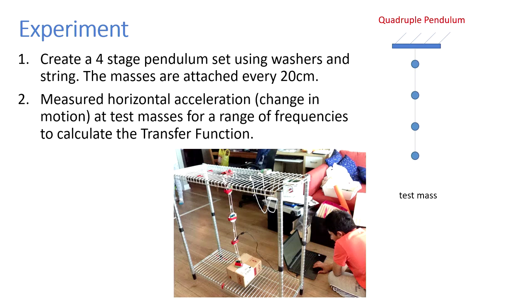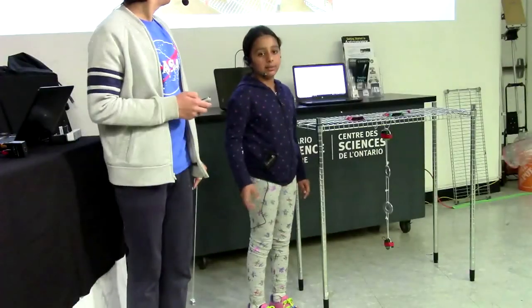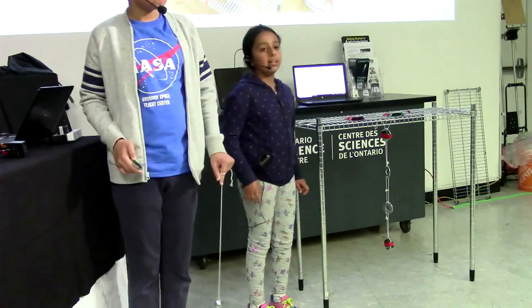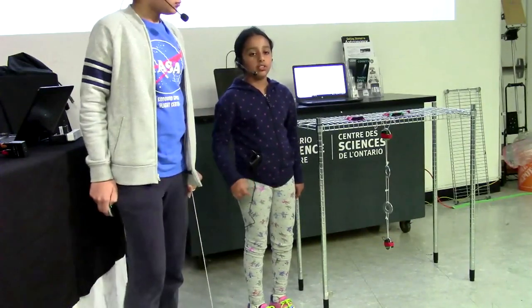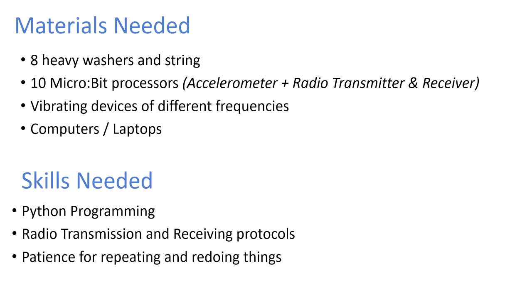How did we make the pendulum? First, I attached four washers together and attached a microcontroller to each washer called a micro:bit, so it can detect the acceleration of each washer using Python. This lets us see the difference in speed between all the washers. The best part about the micro:bits is that they're wireless — no need to connect transmitters to receivers. They measure horizontal vibration on each pendulum and relay it wirelessly to our laptop.